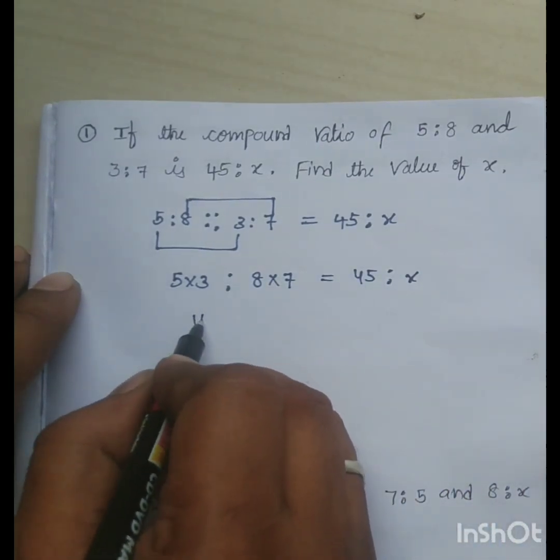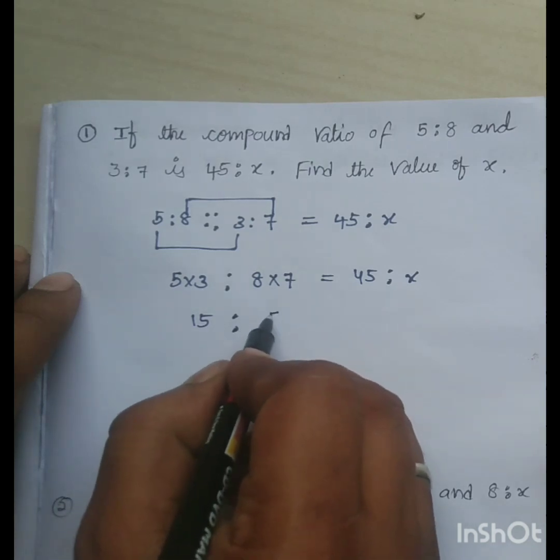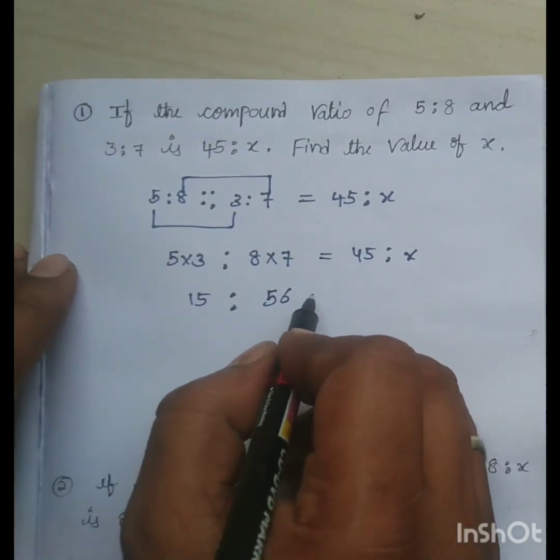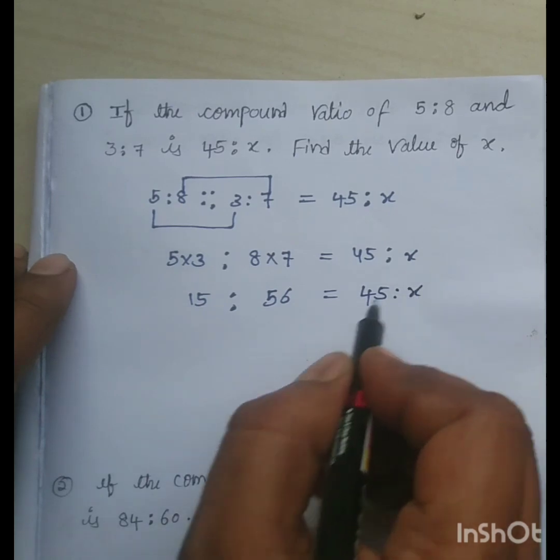So, 5 into 3 is 15, is to 8 into 7 is 56, is equal to 45 is to X.